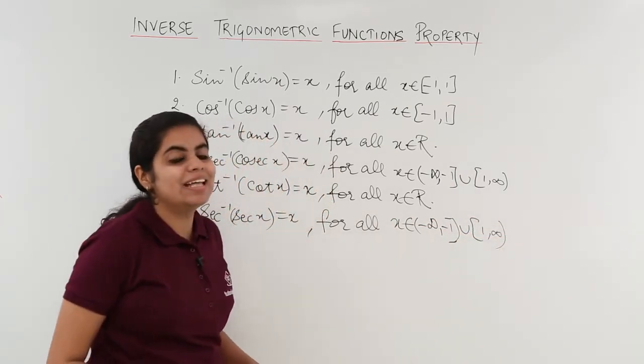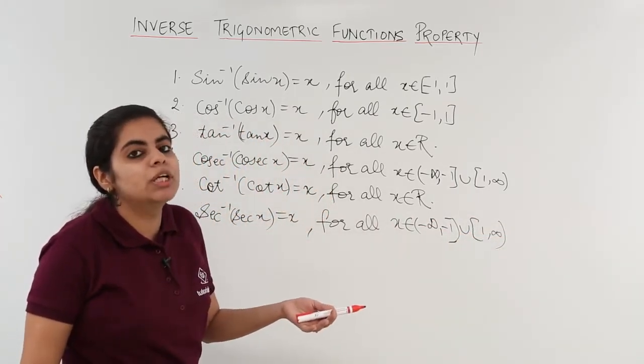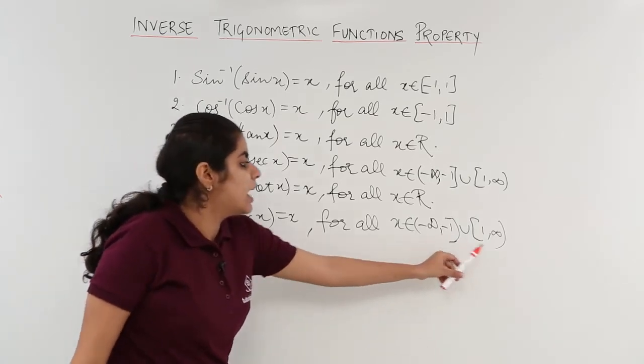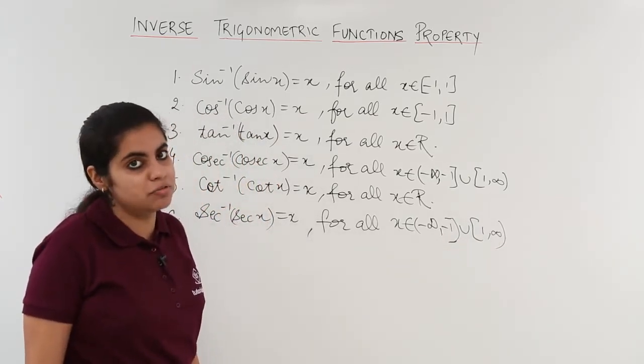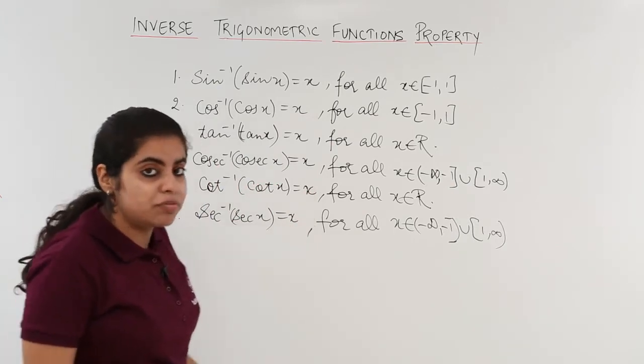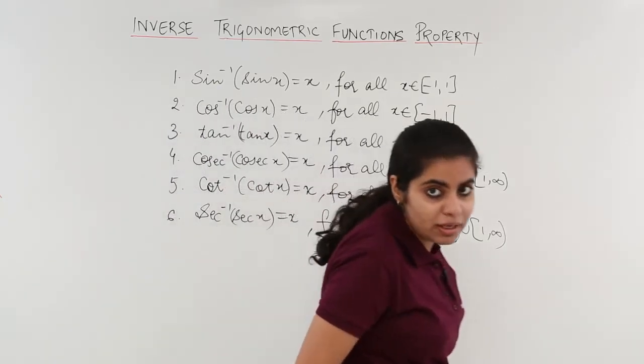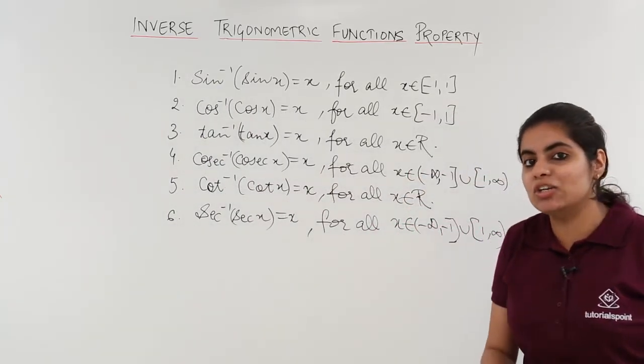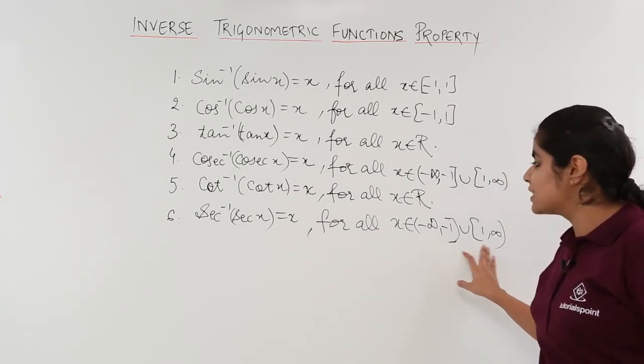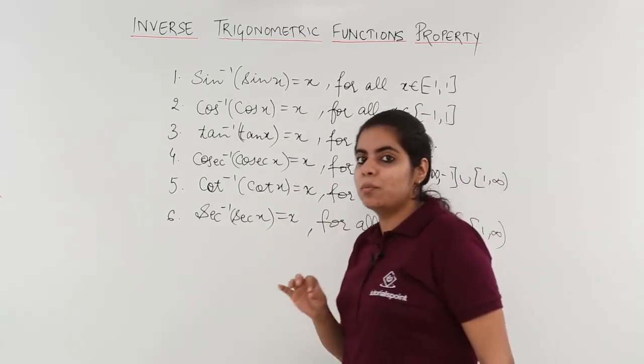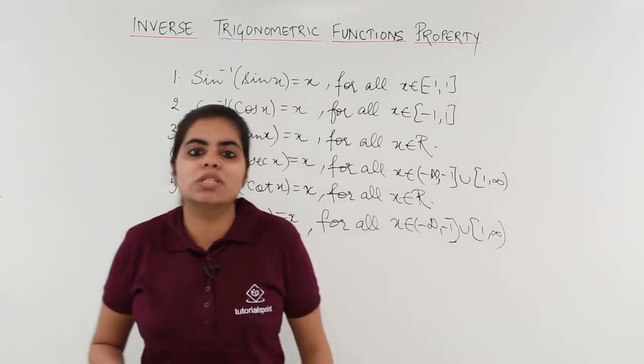Keep it in mind that infinity is an unbounded quantity, so you cannot have square brackets in case of infinity and minus infinity. But yes, definitely in case of 1 for secant theta and cosecant theta, my brackets have to be square brackets, closed brackets.